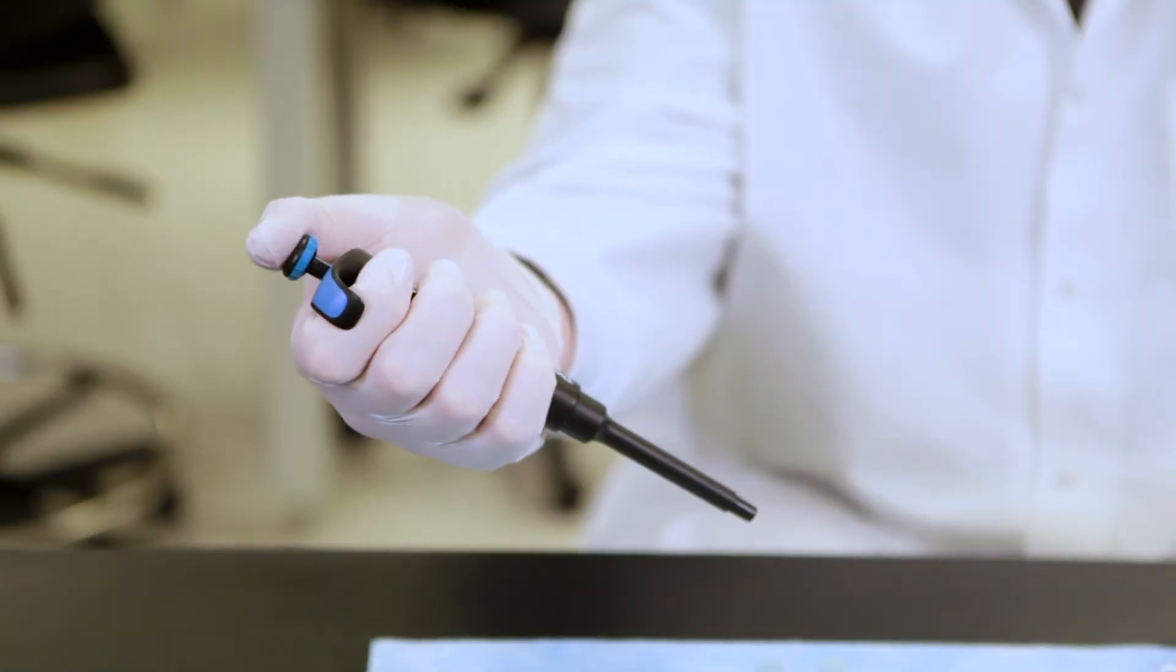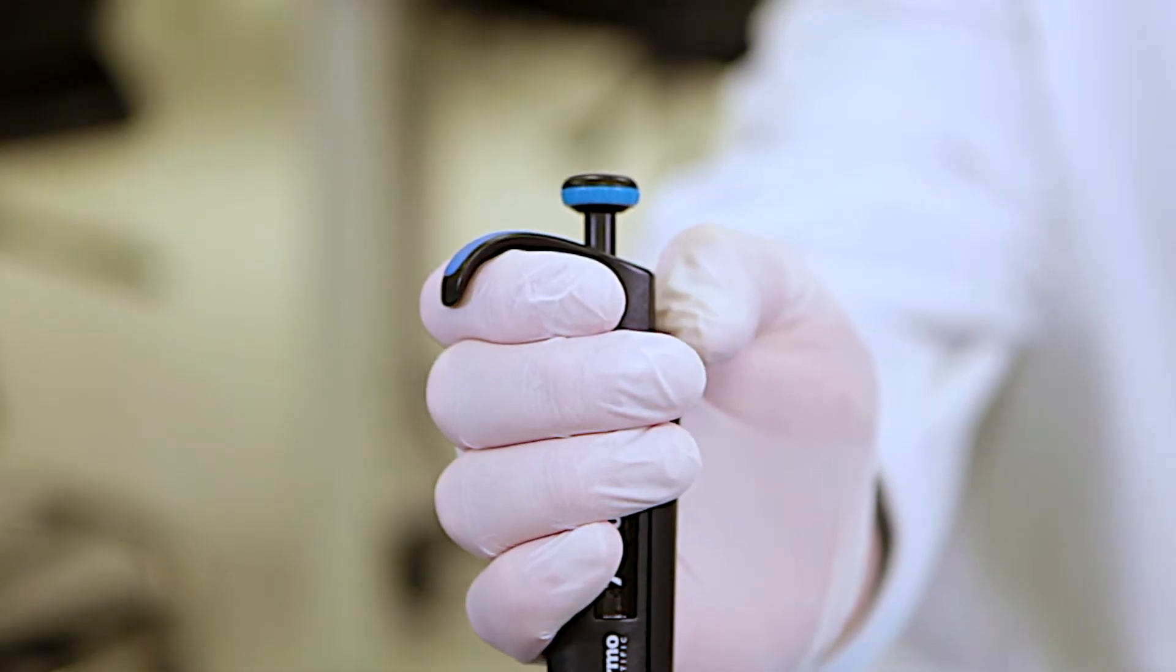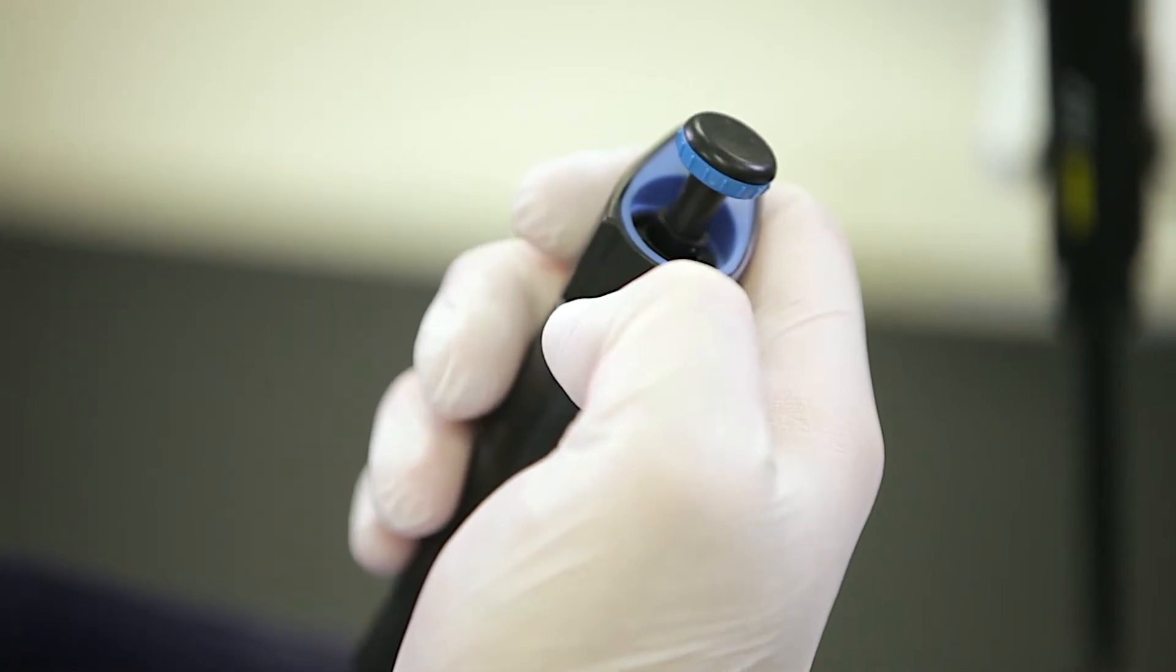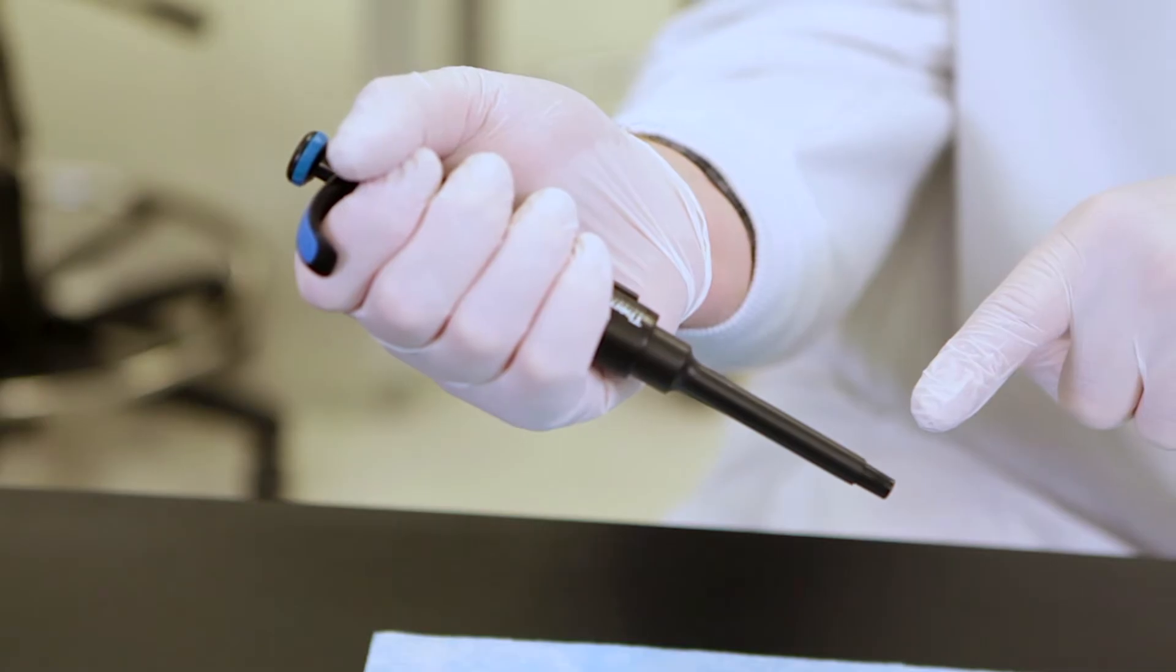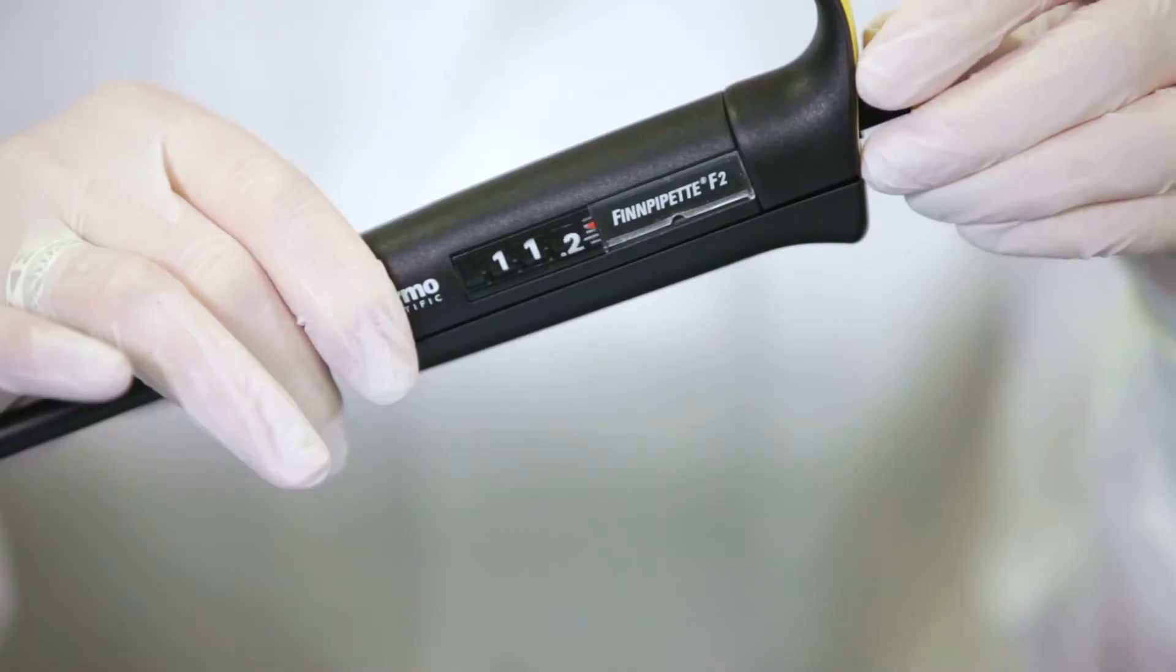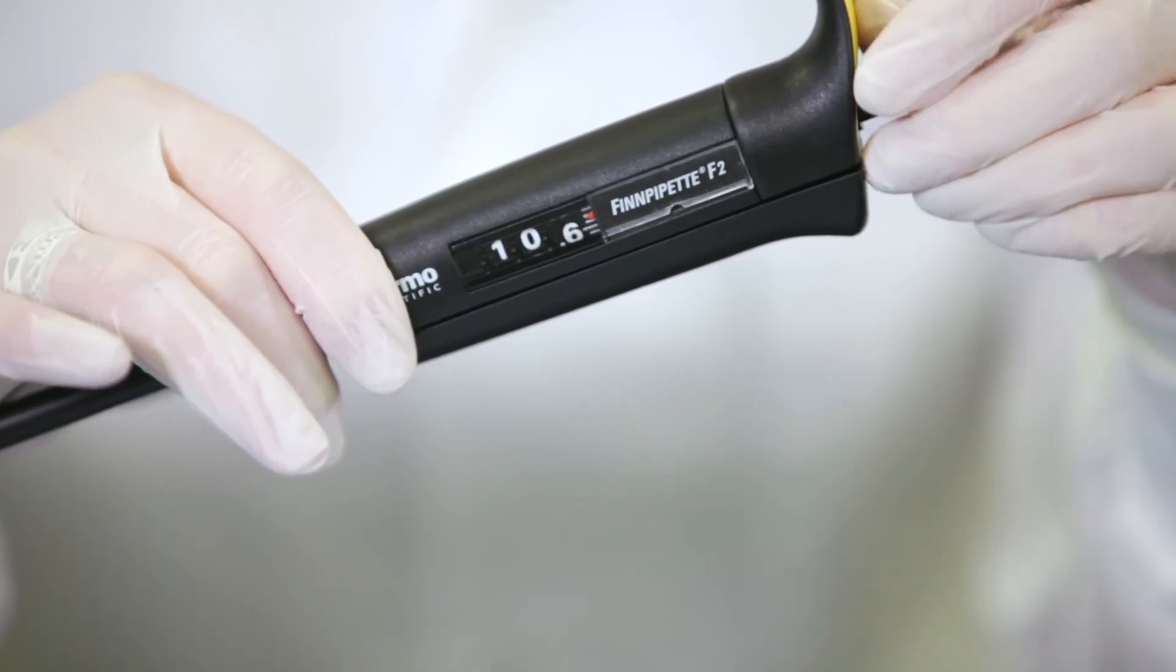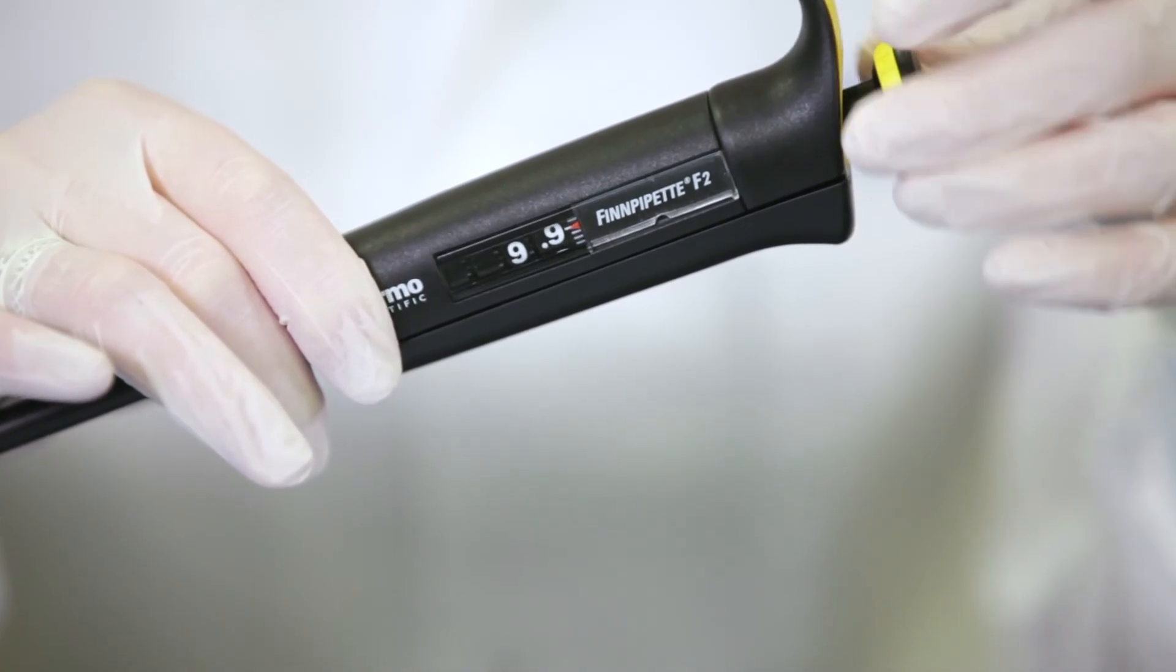The plunger: press the plunger to pick up and dispense liquid. The ejector button: press the eject button to release the used tip. The tip holder is where the disposable pipette tip attaches. The volume adjustment: turn this knob to set the desired volume. Volume indicator displays the volume of the liquid you will be transferring.